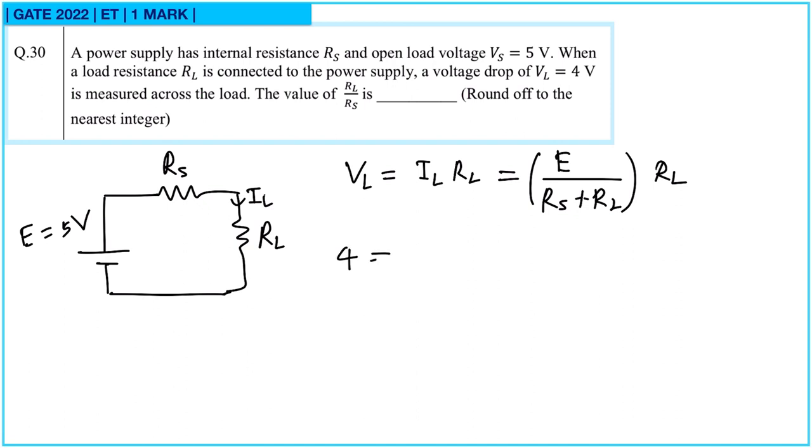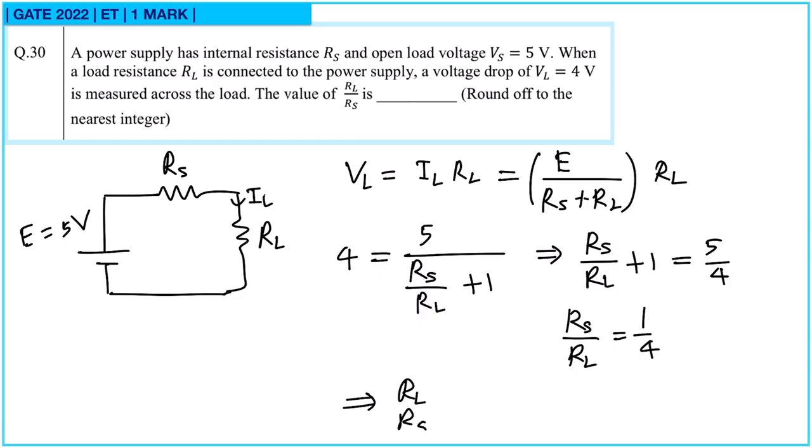Now we have value for VL that is 4. E is 5. Let us divide by this RL. So this will be RS upon RL plus 1. So from here RS upon RL plus 1 is equal to 5 by 4. That means RS upon RL is equal to 5 by 4 minus 1, that is 1 by 4. That means RL upon RS is equal to 4. And we have to round it off to first integer. And the answer range for this question was 4 to 4.